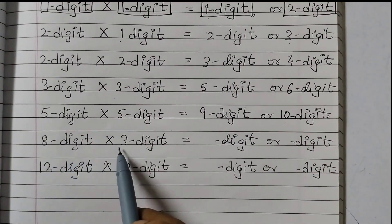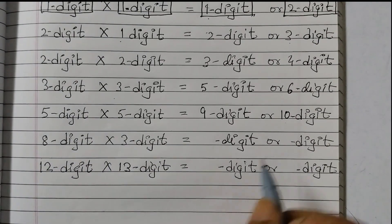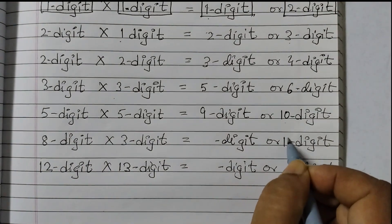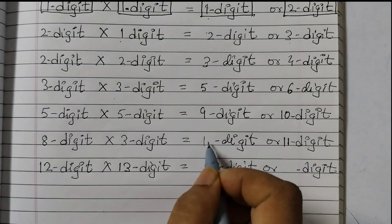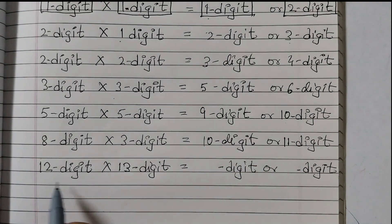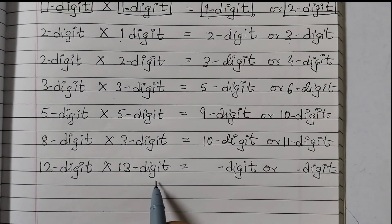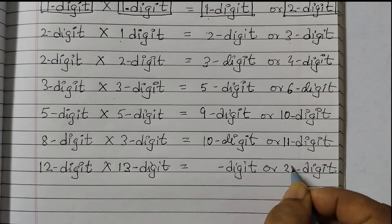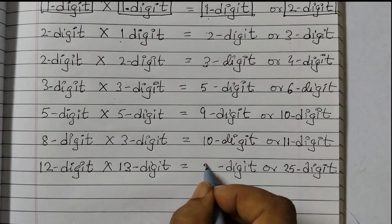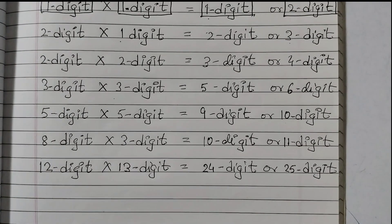8 digit into 3 digit. 8 plus 3, 11. So we can have a 11 digit product or 11 minus 1 is 10. 12 digit into 13 digit. 12 plus 13 is 25. So 25 digit or 24 digit.